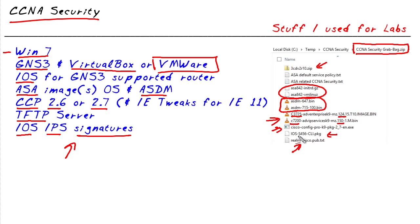If we set up a virtual environment for CCNA security practice, this would cover almost everything except for port security on Layer 2 switches, which currently isn't emulated inside of GNS3 — but perhaps in the future it will be. To be clear, because most of these files are Cisco's creation, I personally cannot distribute these files to you, so I'd like to ask you not to request any of these files from me. My intent in this video is to share which files would be needed to build a virtual environment to practice most of CCNA security.